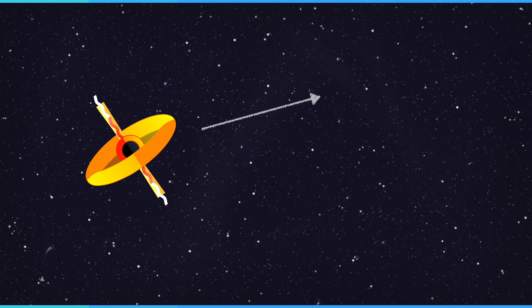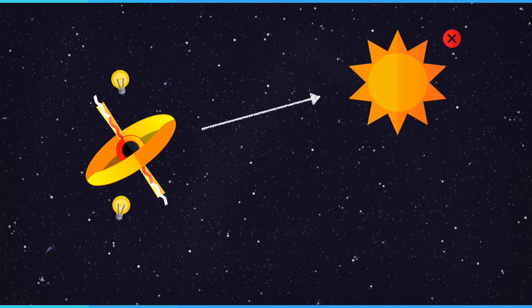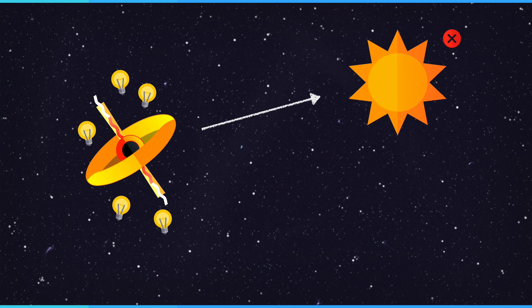So quasars aren't powered like the sun. They are too bright and too energetic. Instead, they are powered by a supermassive black hole.